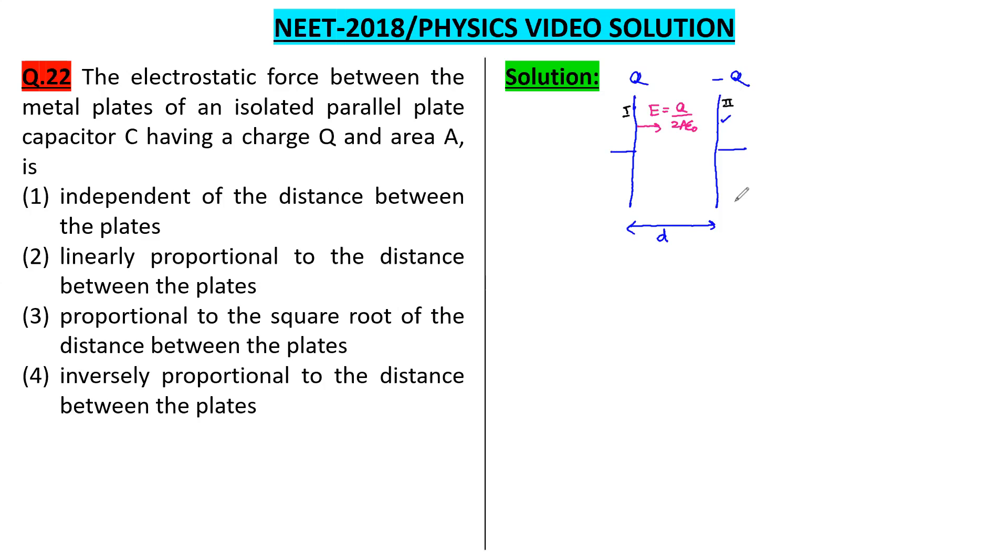The electric field at the position of plate 2 by plate 1, at this point the electric field would be in this direction and this will also be Q upon 2A epsilon 0.